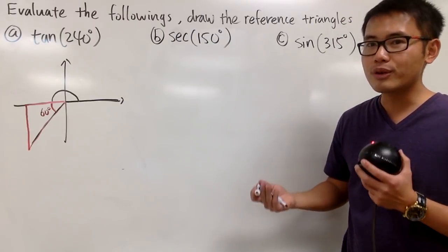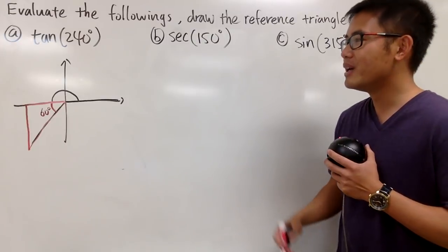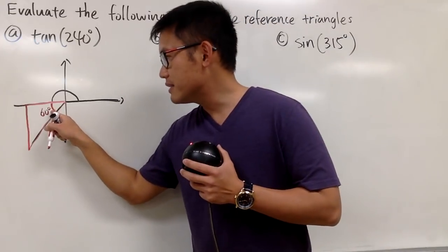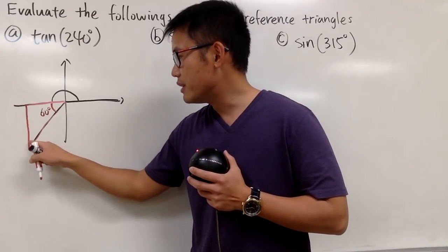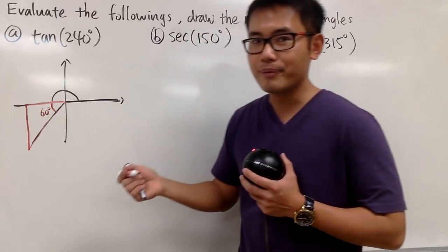And sometimes we will be dealing with quadrant angles, but that's for another video. But anyway, when we have 60 degrees right here, we know this is 30. This is of course a 90 degree angle.